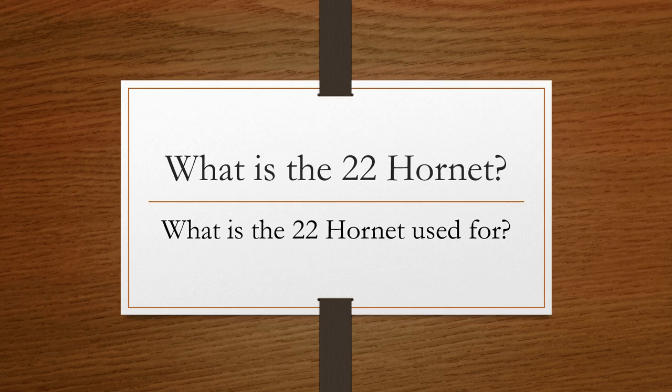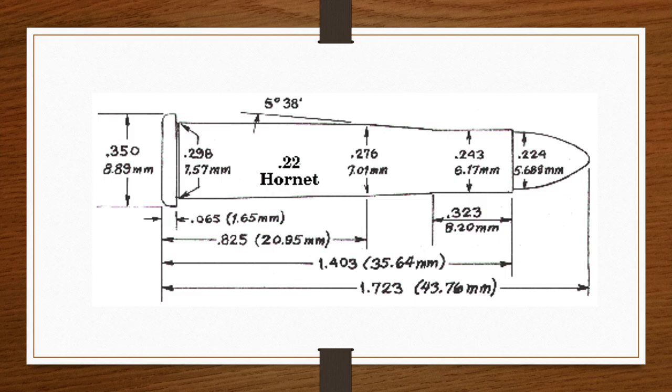So the historical notes: the .22 Hornet, based on the black powder .22 Winchester centerfire, was developed during the late 1920s.